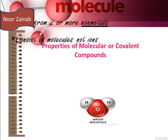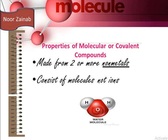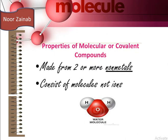Some properties of molecular or covalent compounds: they are made from two or more non-metals, and they consist of molecules, not ions. For example, the water molecule is a covalent compound.